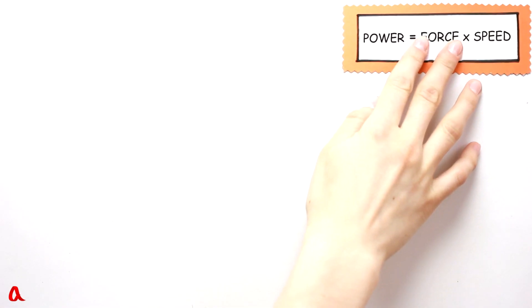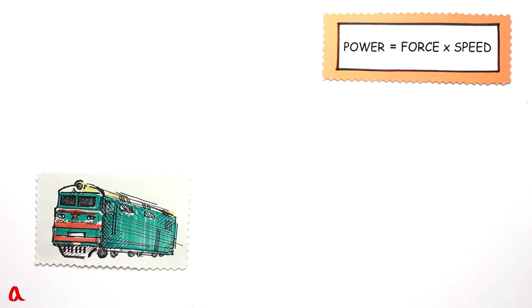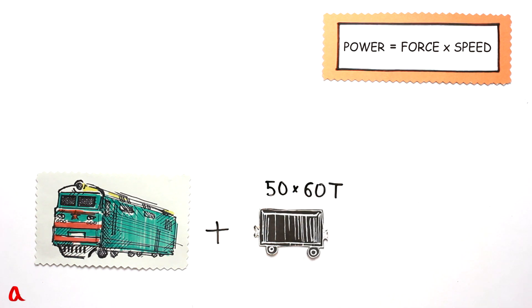Let's use this formula to calculate the power of an electric locomotive. The locomotive is pulling a 50 carriage train and each carriage weighs 60 tons. In this case the whole train weighs 3000 tons or 3 million kilos. We can also say it is 30 million newtons. The locomotive power may reach one hundredth of the train's weight, which means the traction force of 300,000 newtons.